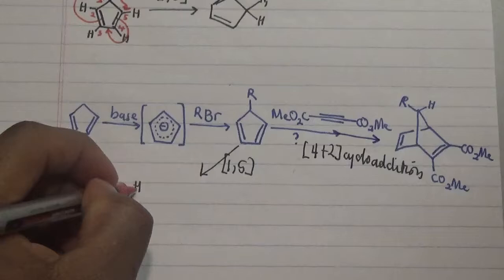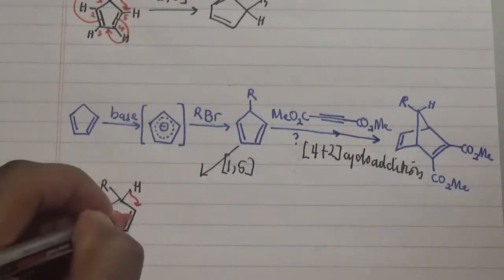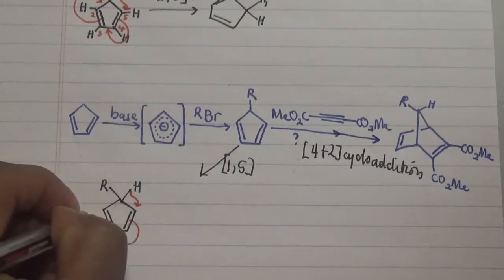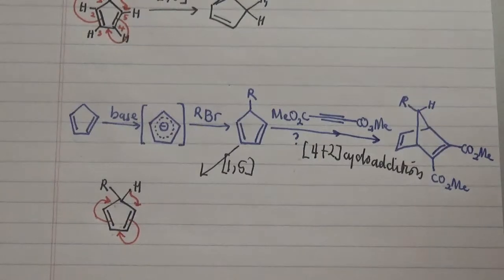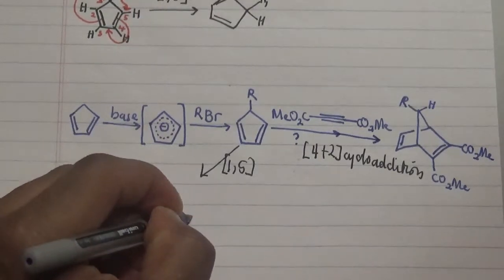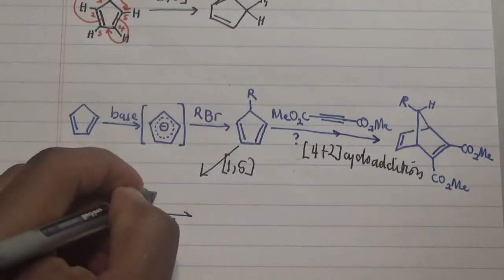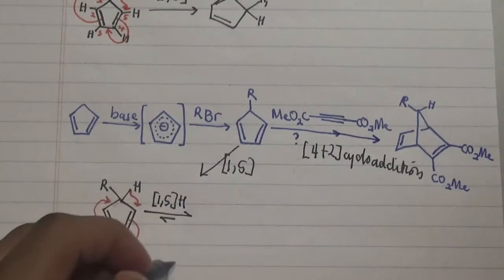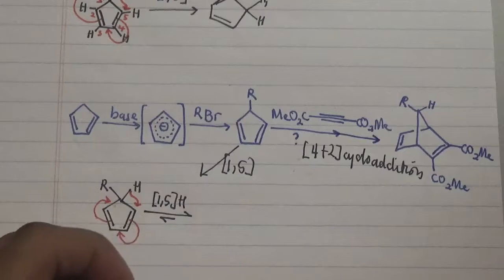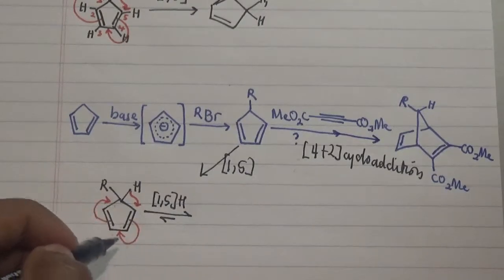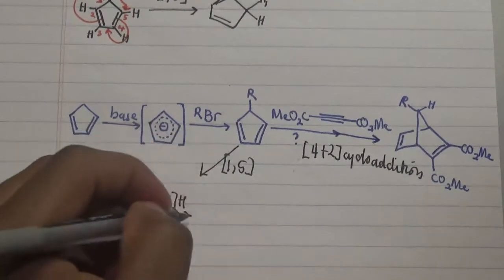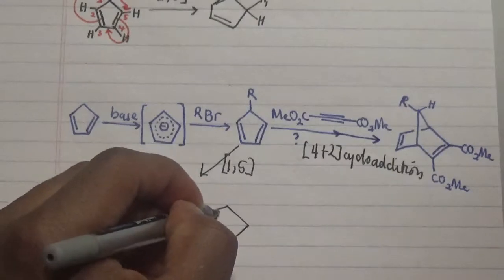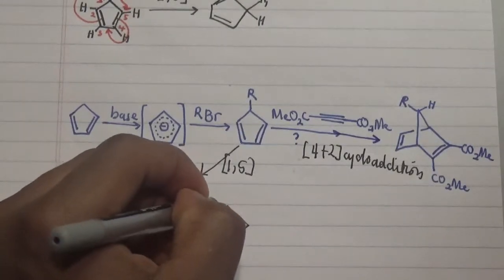So what happens here is we perform a 1,5-sigmatropic hydrogen shift, and we have this process taking place. The reaction is actually proceeding more towards the right than to the left. This right favorability is actually due to more stabilization of the double bond being formed in this particular case.